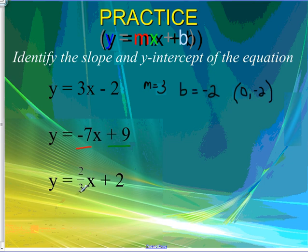Again, our slope in this particular case would be 2 thirds. And our y-intercept would be plus 2, or 0, 2.